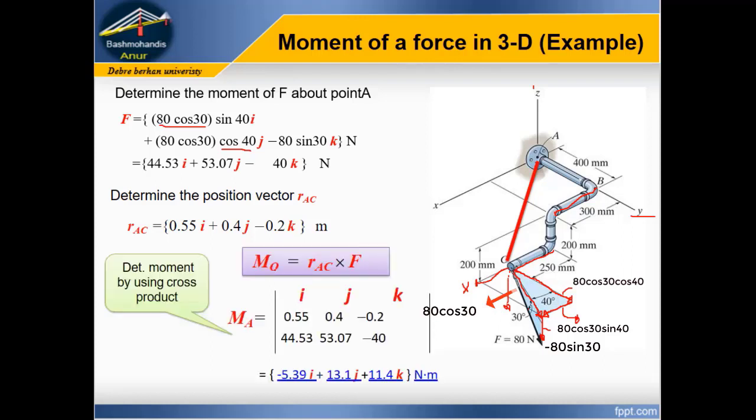Finally, if we calculated F and rAC, moment can be calculated using the cross product of rAC with F. The determinant of the matrix. Therefore, MA equals the cross product of rAC and F.